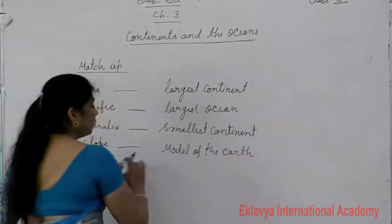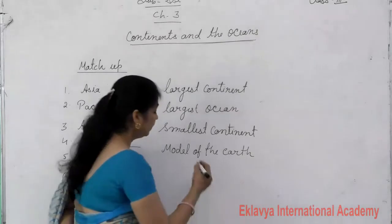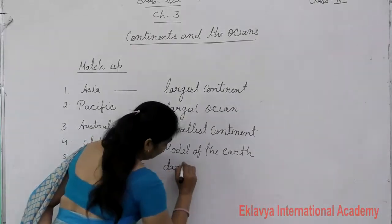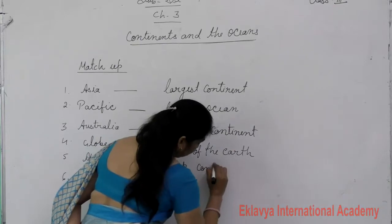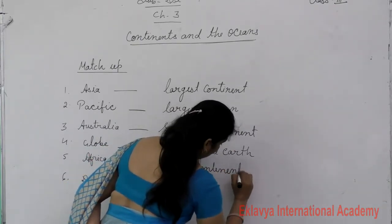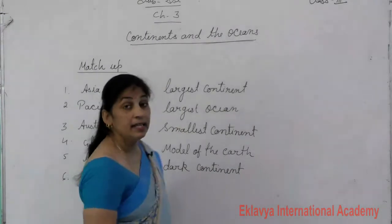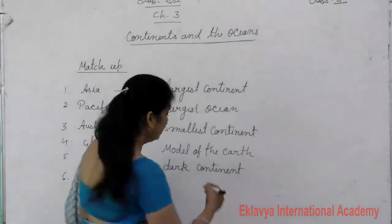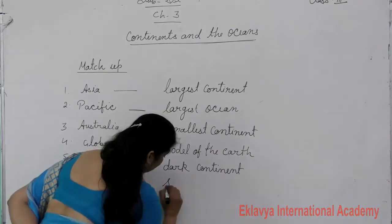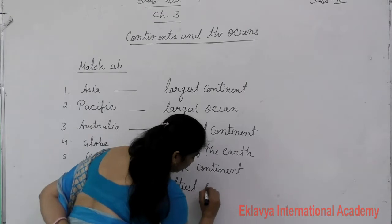Africa is the dark continent. Last is the Dead Sea. The Dead Sea means the saltiest sea in the world.